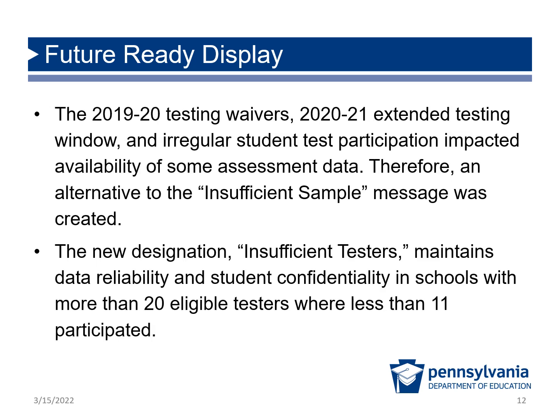A new data sampling error message has also been created. Because of the waivers, extended window, and irregular participation, a new designation — Insufficient Testers — has been developed to maintain reliability and protect student confidentiality in schools with more than 20 eligible testers in which less than 11 participated.